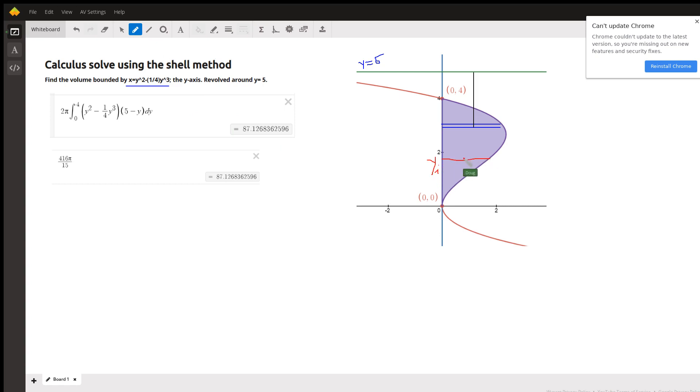the height of that shell is going to be, in terms of y, y squared minus one fourth y cubed.